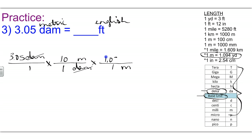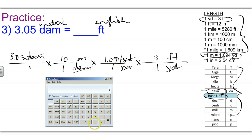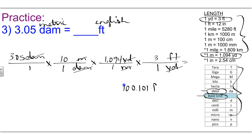1 meter equals 1.094 yards. Meters have now canceled. Still trying to go to feet, but now that I'm at yards, that's in the English system. Bring down yard, and 1 yard equals 3 feet. So I can go directly from yards to feet. Yards cancel and I'm done setting up the problem. Calculating: 3.05 times 10 times 1.094 times 3 gives me 100.101 feet, which rounds off properly to 100. feet.